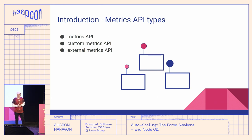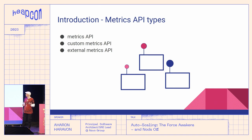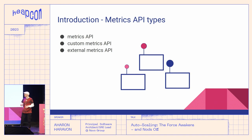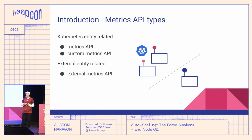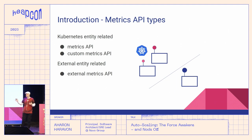The source of the metric for the HPA controller may come from one of three supported APIs: the metrics API, the custom metrics API, and the external metrics API. None of these APIs is available in Kubernetes by default, so to have one or more of them in the cluster we need to provide additional software. The metrics API and custom metrics API metrics relate to Kubernetes entities such as pods, nodes, and ingresses. The external metrics API metrics relate to external entities.